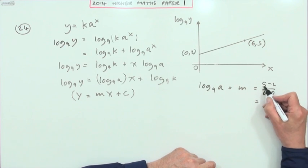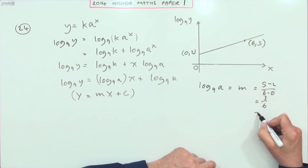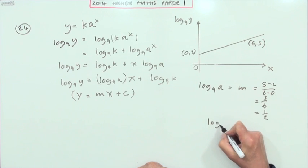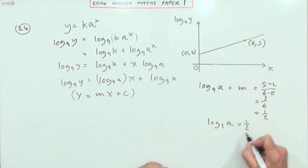So that's 3 upon 6, which is a half. So log base 9 of a is a half, so a will be, applying the inverse of log base 9 which is 9 to the power, 9 to the power a half is 3. There's one of them done.